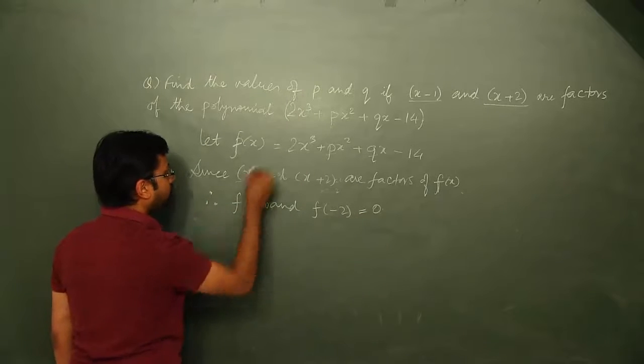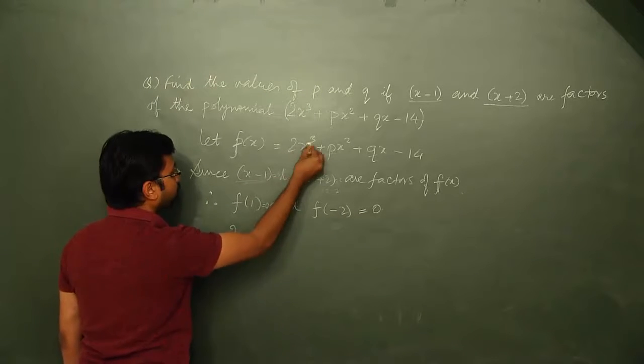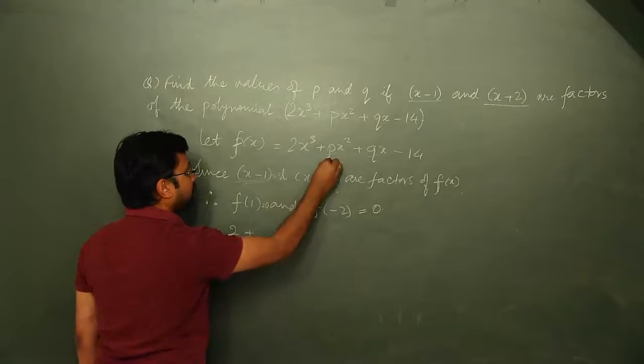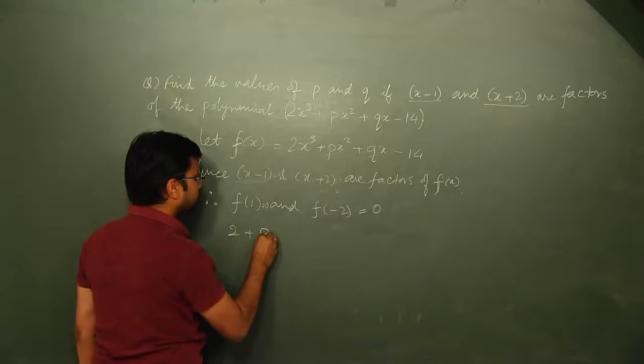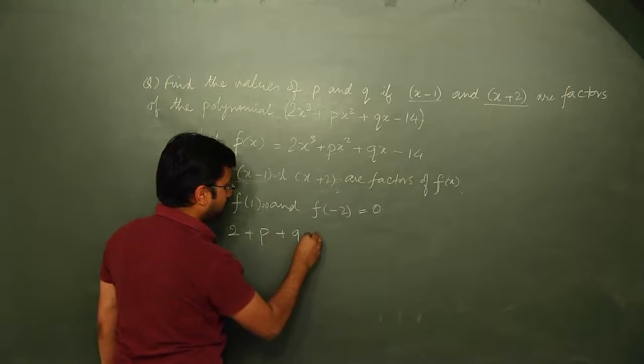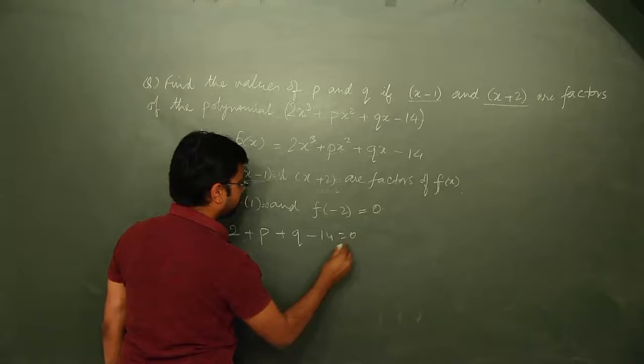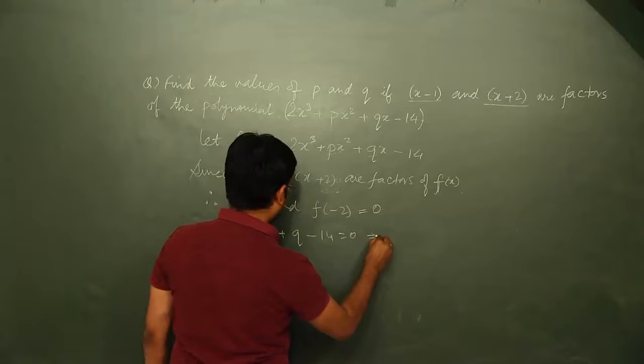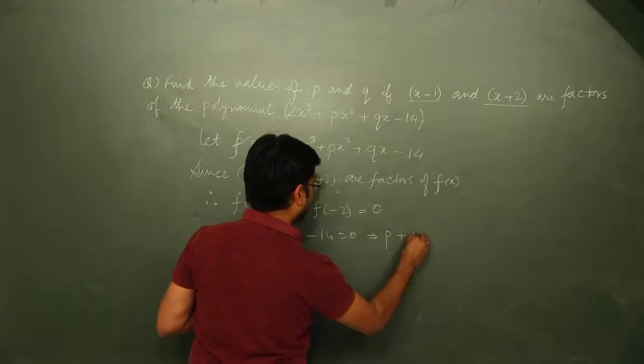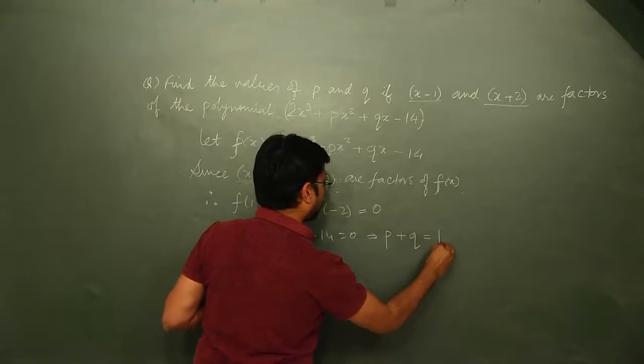So what do we get? f(1) will be 2 into 1 cubed is 1 plus p into 1 squared is p plus q minus 14 equals 0. This would imply that p plus q equals 12.